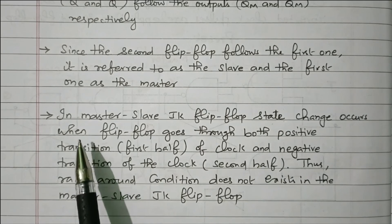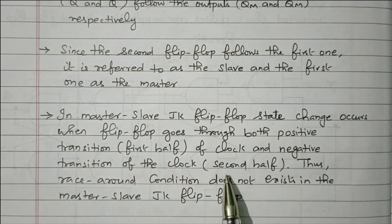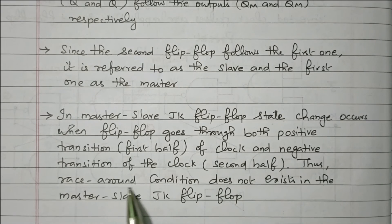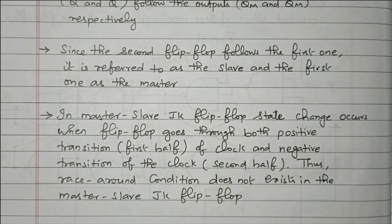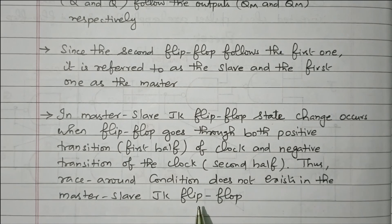During positive transition, the first flip-flop works; during negative transition, the second flip-flop works. Thus, the race-around condition does not exist in the master-slave flip-flop. The race-around condition — both inputs being 1 — is not possible here because of master-slave operation: the master receives the positive edge and the slave receives the negative edge. So the race-around condition is eliminated in the master-slave JK flip-flop.